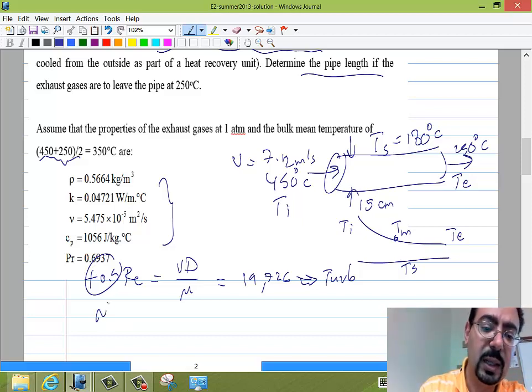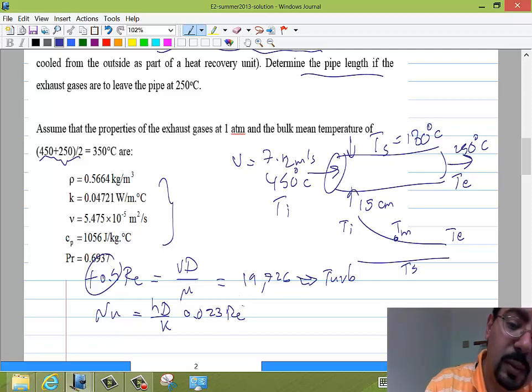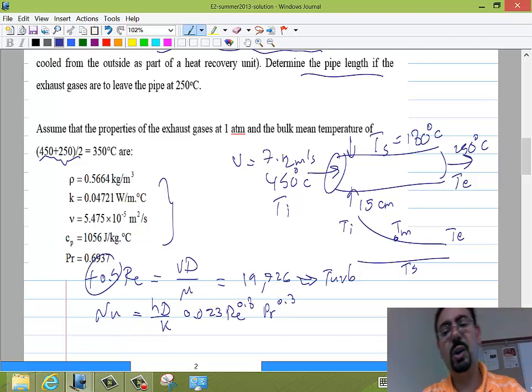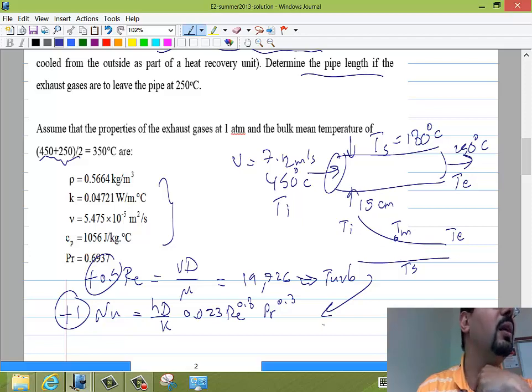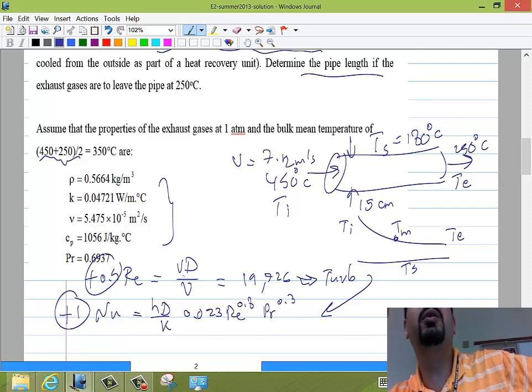So we jump to get the Nusselt number. So it's HD over K equals 0.023 Reynolds to the 0.8, Prandtl to the 0.3, because the fact that we are cooling the fluid. So that equation is worth one point. So now one of you should stop me here and say you have done something wrong. The formula? Something else wrong. It's about that formula. What do you don't like about this formula? No, it should be 0.3, it's something else.